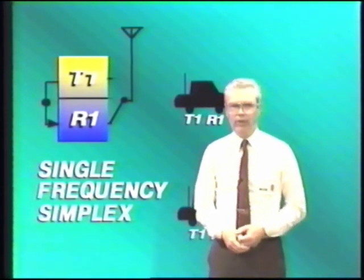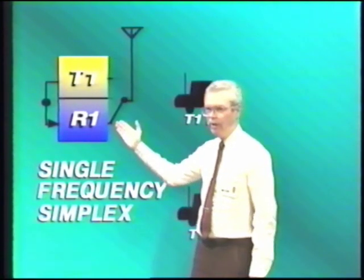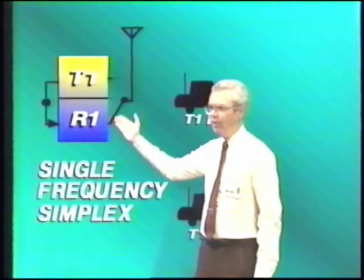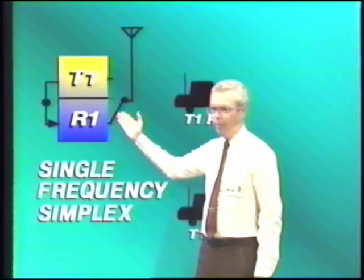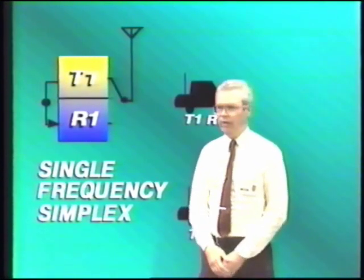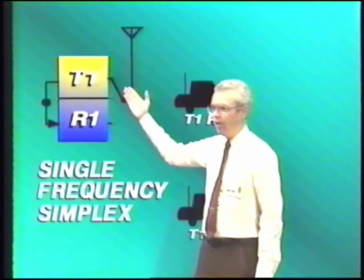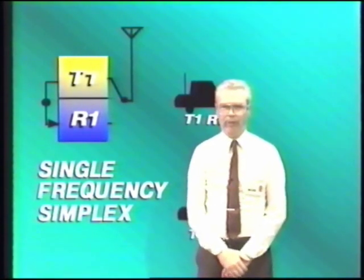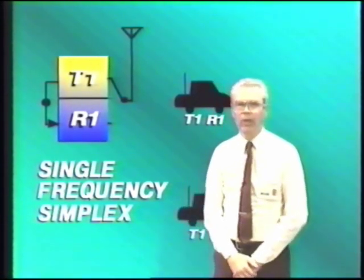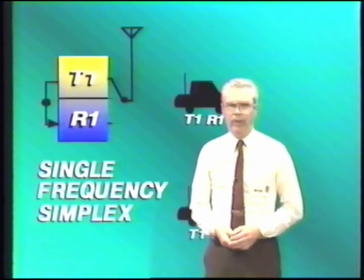You'll note from this diagram that the single antenna is shared between the transmitter and the receiver. Normally it's connected to the receiver, but when the transmitter is operated, there is a relay or some type of automatic switch that will transfer the connection from the receiver to the transmitter. So the operation of the system is quite simple.